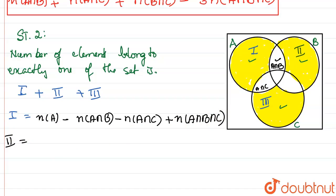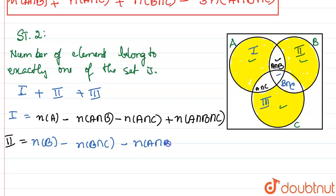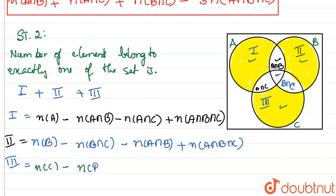Part 2 is the exclusive portion of B: N(B) minus N(B∩C) minus N(A∩B) plus N(A∩B∩C). Part 3 is the exclusive portion of C: N(C) minus N(A∩C) minus N(B∩C) plus N(A∩B∩C).